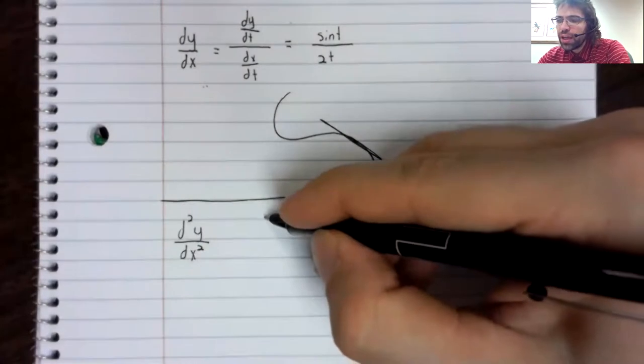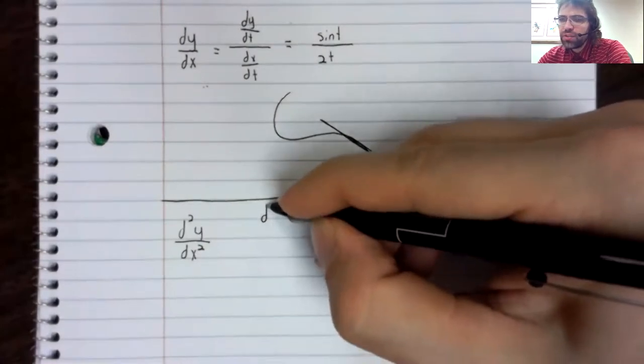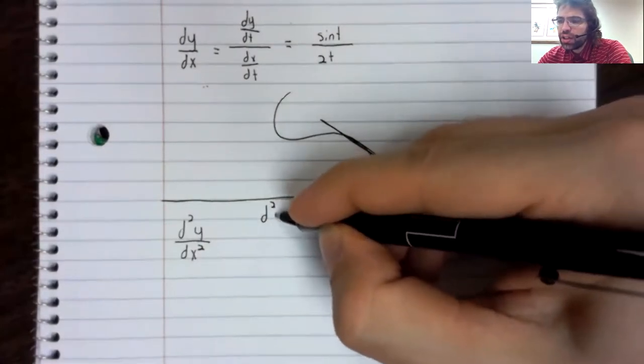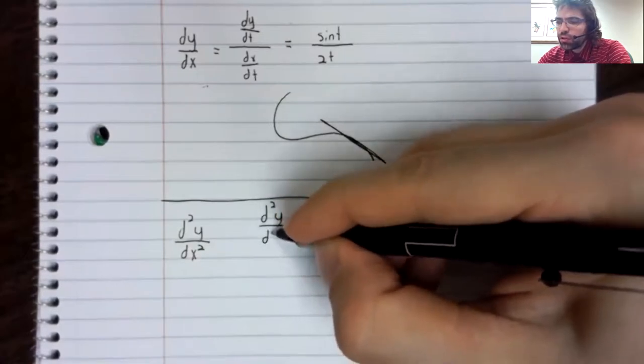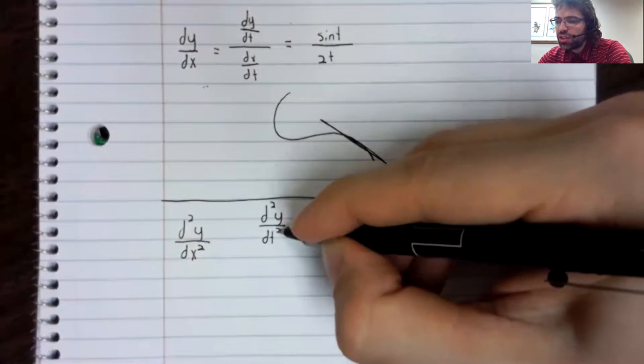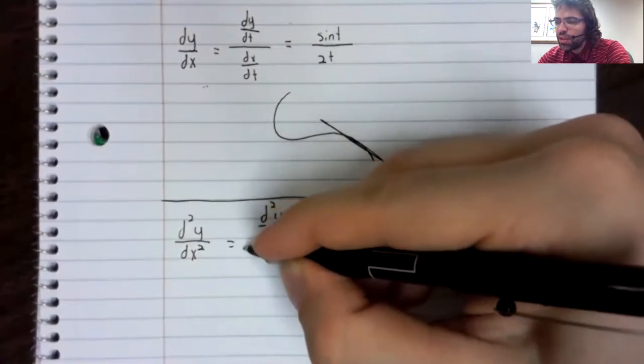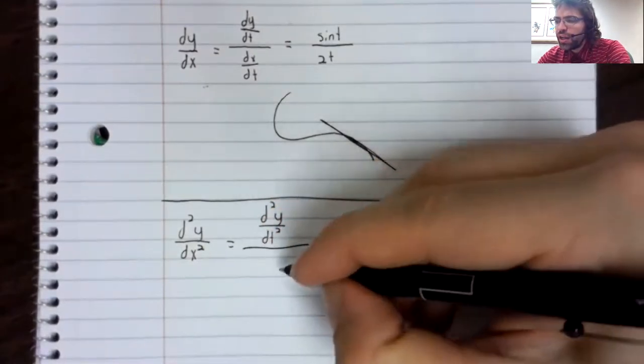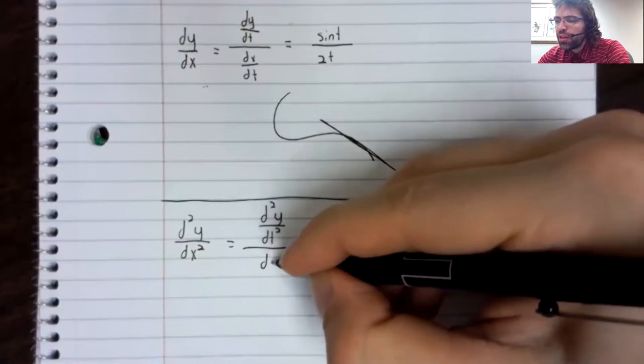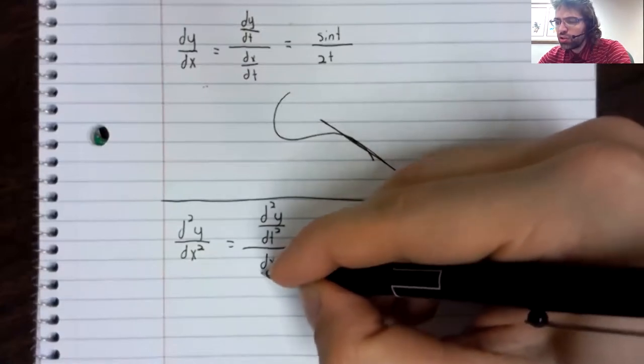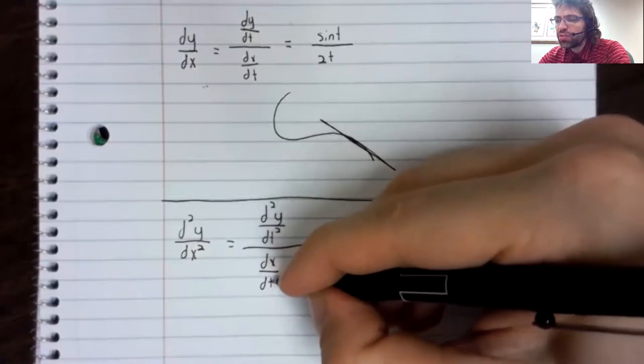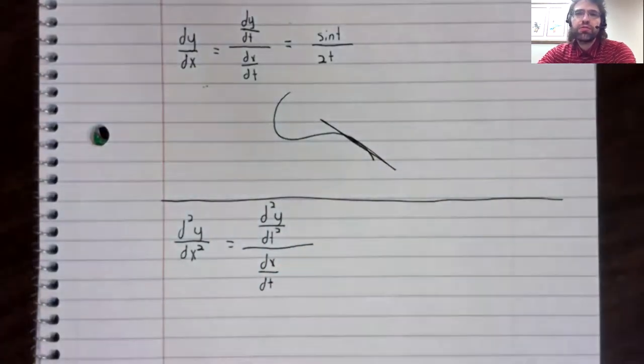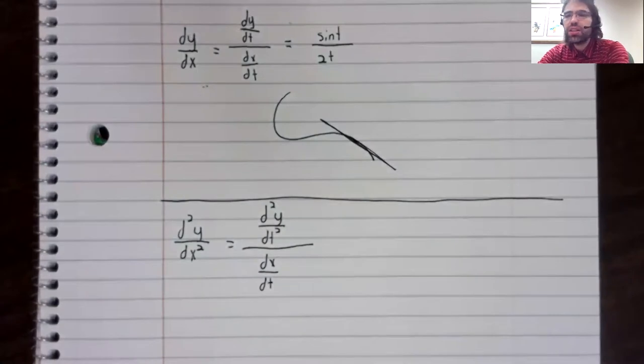What we're going to have is the second derivative of y with respect to t divided by the first derivative of x with respect to t.